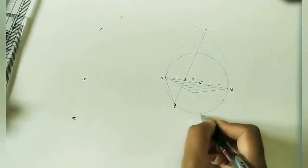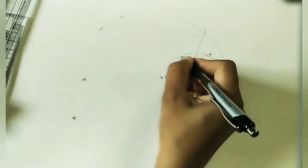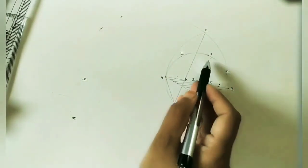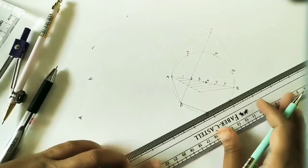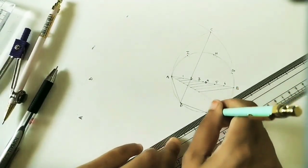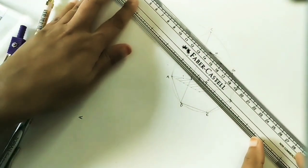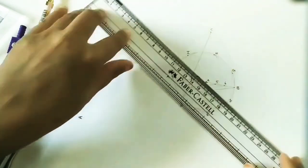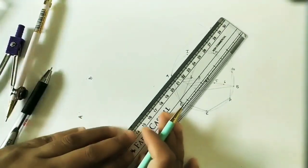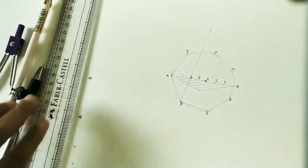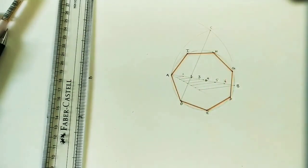So here we have divided into seven divisions. Mark the intersection points E, F, G, H, I. Join all these points with the help of a scale. We will get the heptagon. All the sides have equal length. Make it dark. It is a heptagon: A, D, E, F, G, H, I, A - a heptagon of seven sides.